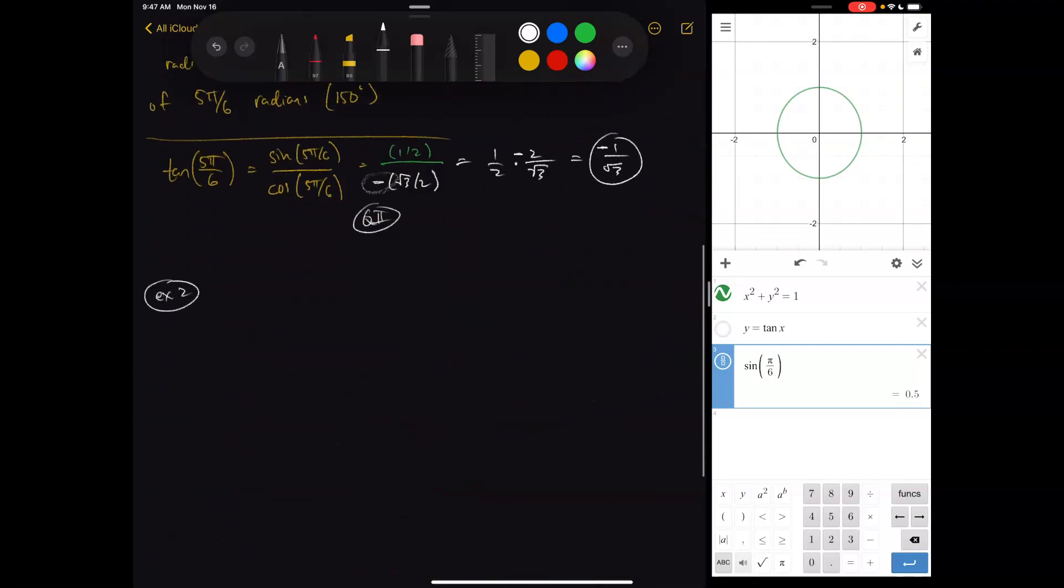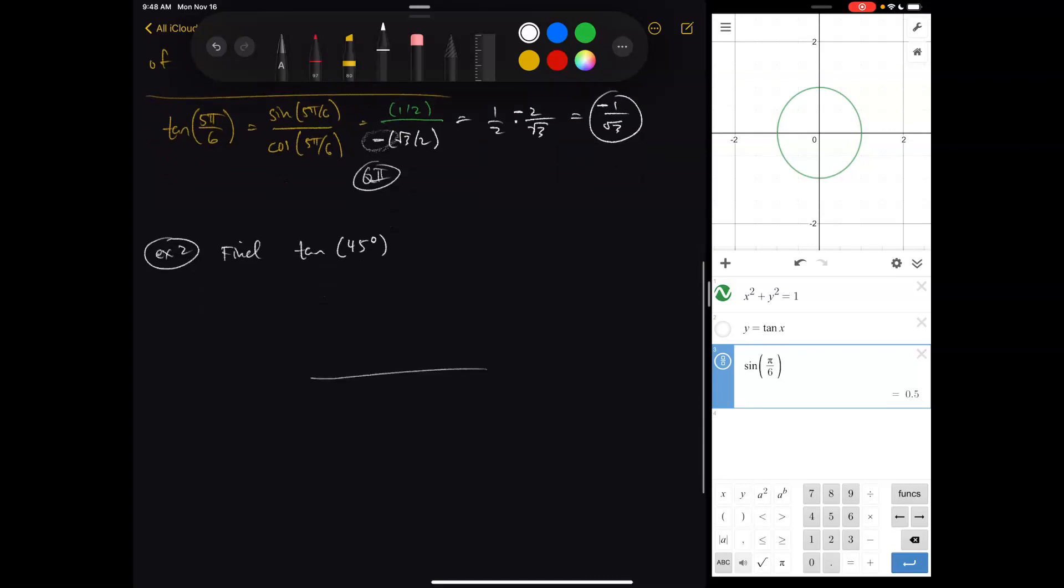So let's look at one more example: find the tangent of 45 degrees. The tangent of 45 degrees, if we think about it on the unit circle, a rotation of 45 is halfway here. So we're looking at the point (cos 45, sine 45) here.